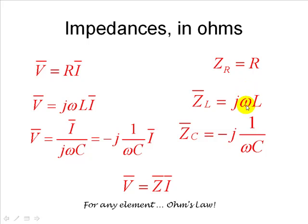Who is ω, by the way? Ω is the angular frequency in radians per second of voltages and currents in the network, of course.